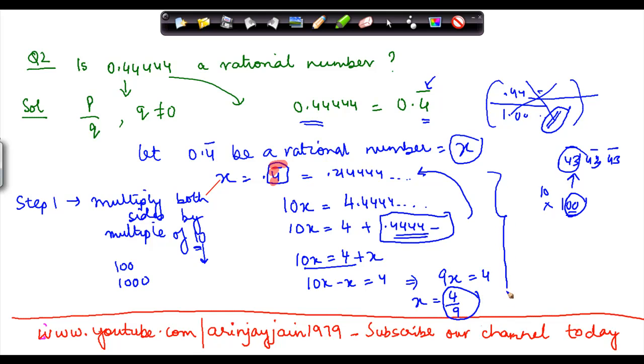So the idea behind doing this thing is that as step 1, whenever you have these repeating factors, find out what is the number of repeating factors. Let's say it is 1 in this case, and we assume that, you know, assuming this is a rational number.